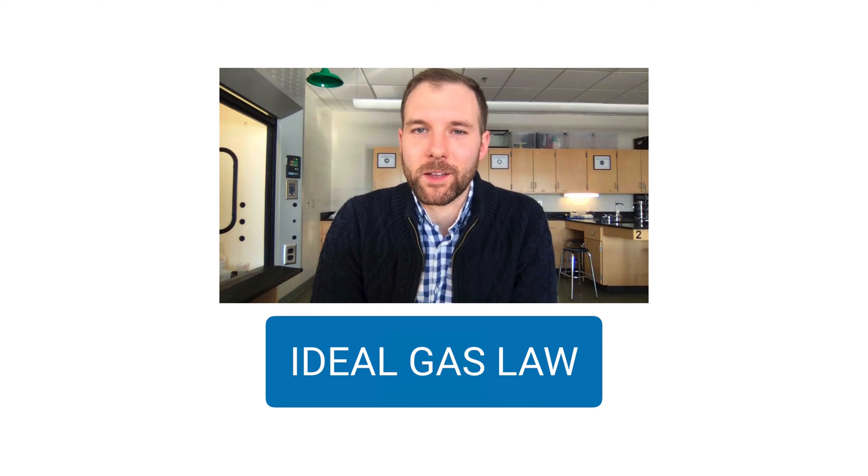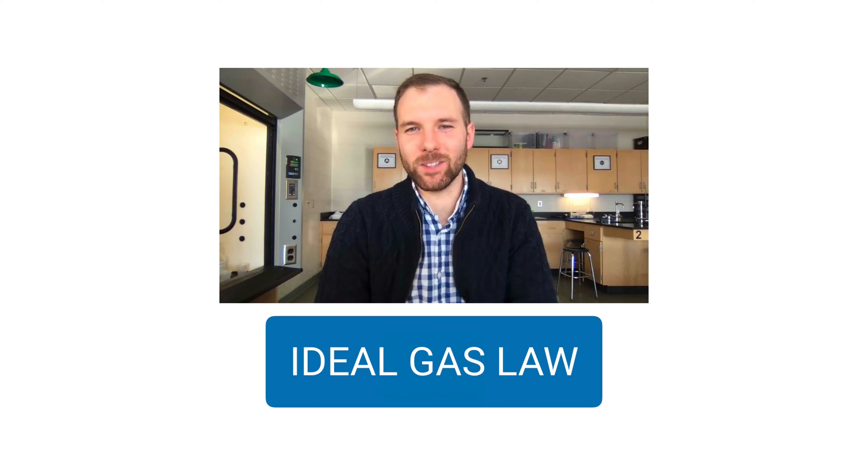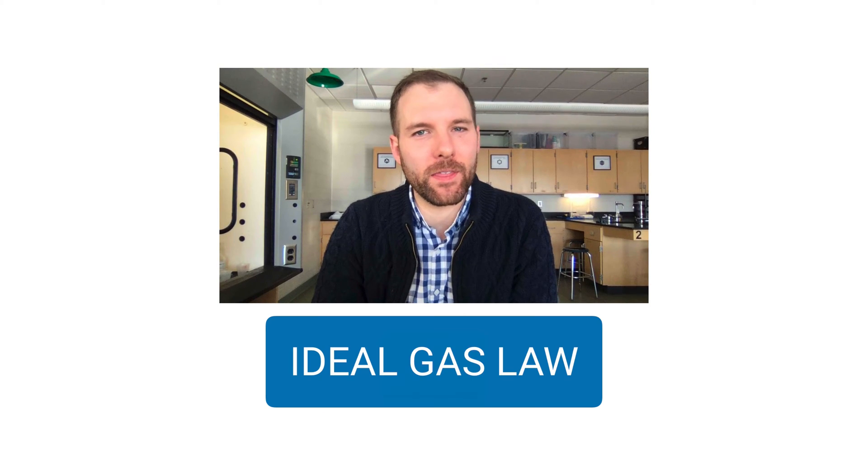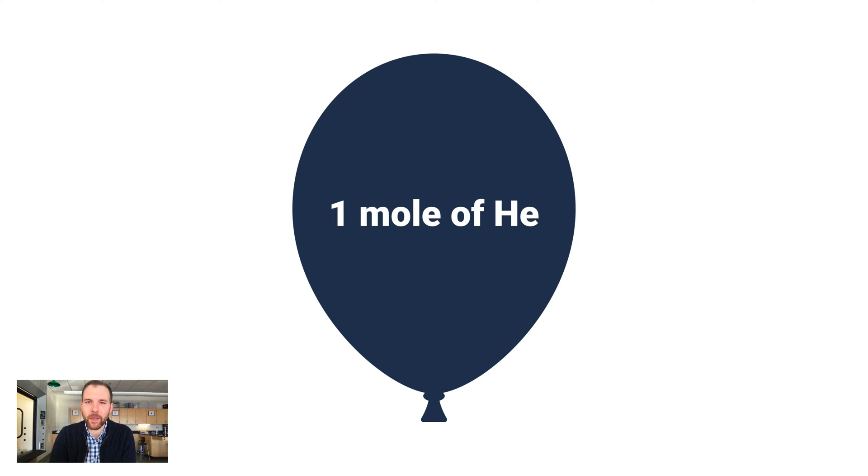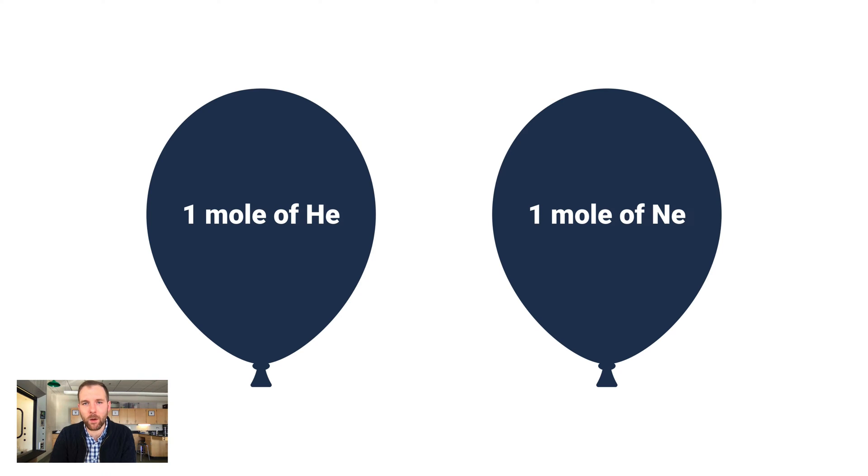Hi, in this video we're talking about the ideal gas law. In order to fully understand this, I want to talk about something first. Let's say I had a balloon that had one mole of helium gas in it. Don't forget, one mole of something means about six times ten to the twenty-third particles of that thing. In this case we're talking about helium, and helium is an element, so those particles would be atoms. Long story short, this mole of helium contains about six times ten to the twenty-third atoms of helium.